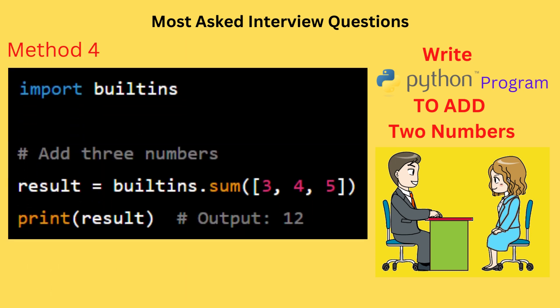You can also use the sum function from the builtins module to add multiple numbers. Import builtins, add three numbers: result = builtins.sum([3, 4, 5]), print(result) outputs 12.